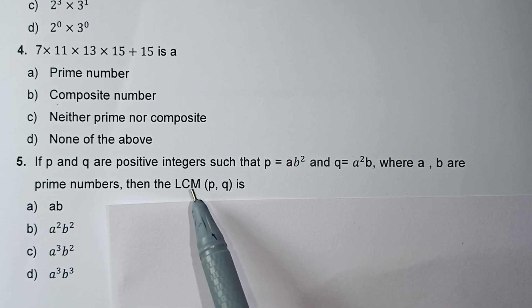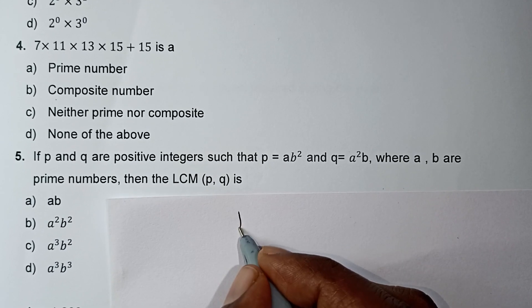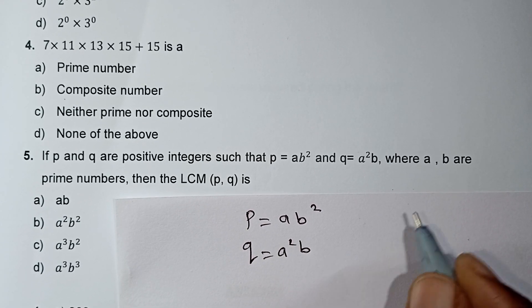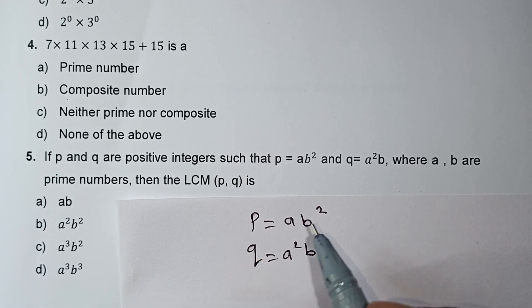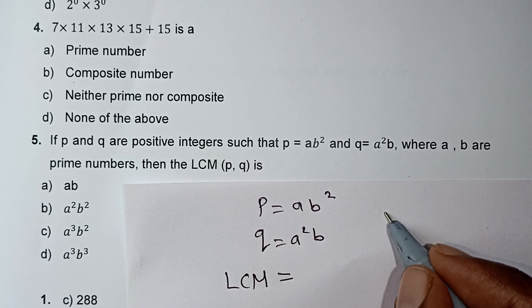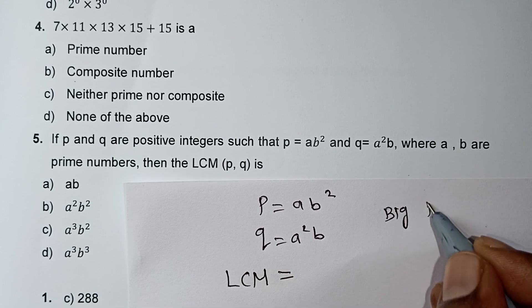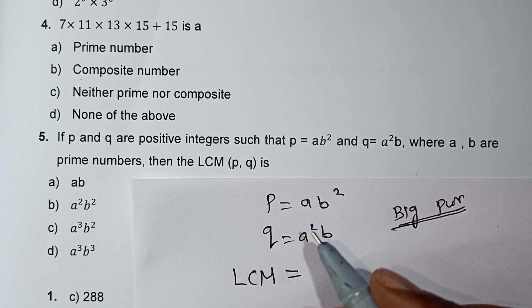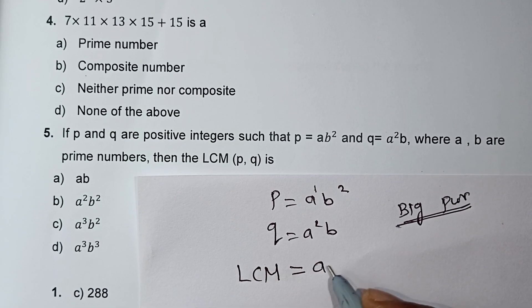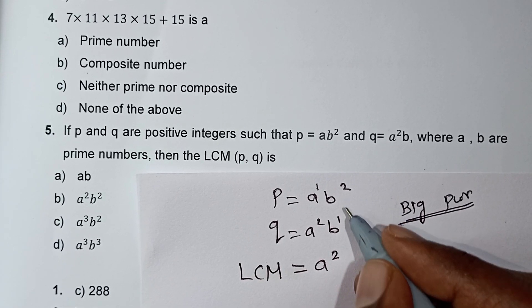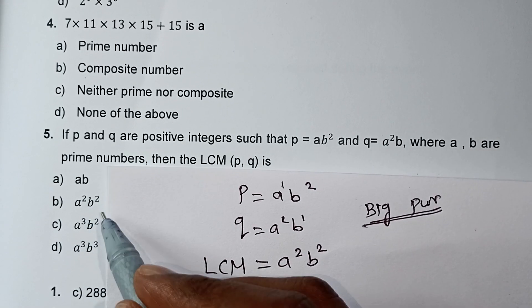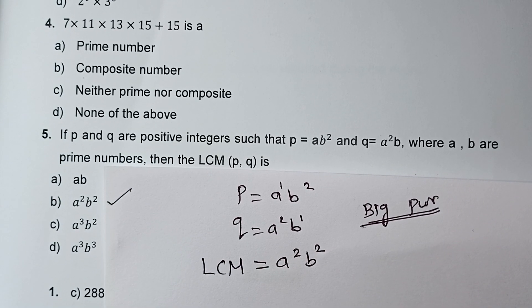Next: P and Q are positive integers. P = a × b², Q = a² × b, where A and B are prime numbers. The LCM of P and Q — for LCM we take the biggest power. A: comparing a¹ and a², a² is bigger. B: comparing b¹ and b², b² is bigger. So LCM = a² × b², which is option B.